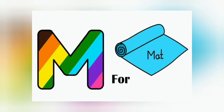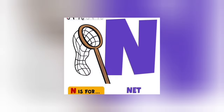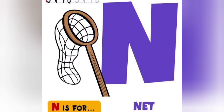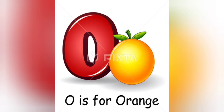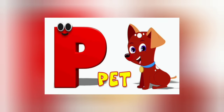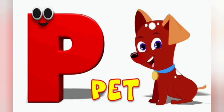M is for mat, m-m-mat. N is for net, n-n-net. O is for orange, o-o-orange. P is for pet, p-p-pet.